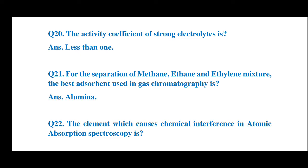Question number 21: For the separation of methane, ethane, and an Italian mixture, the base absorbent used in gas chromatography is — the answer is alumina. The base absorbent used in gas chromatography for the separation of methane, ethane, and the mixture is alumina.